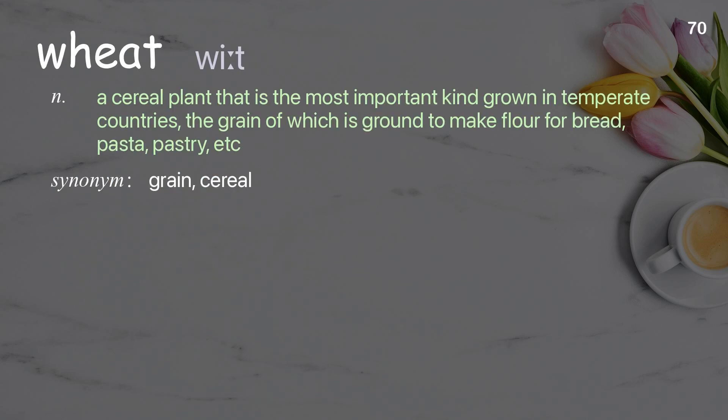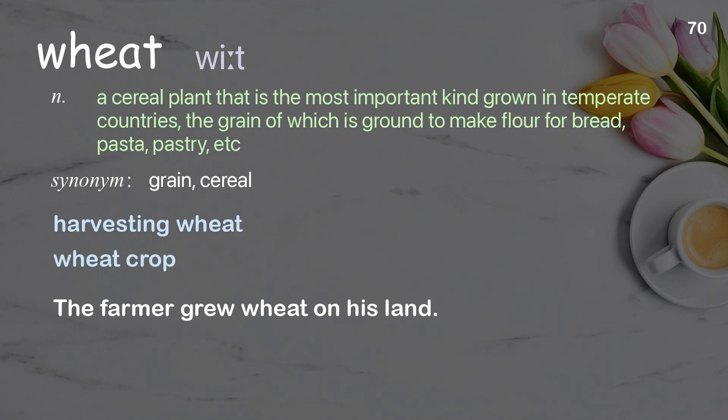Wheat: a cereal plant that is the most important kind grown in temperate countries, the grain of which is ground to make flour for bread, pasta, pastry, etc. Examples: harvesting wheat, wheat crop. The farmer grew wheat on his land.